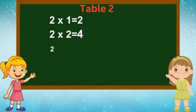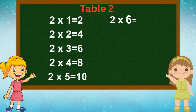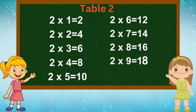Once again: 2 1s are 2, 2 2s are 4, 2 3s are 6, 2 4s are 8, 2 5s are 10. 2 6s are 12, 2 7s are 14, 2 8s are 16, 2 9s are 18, 2 10s are 20.